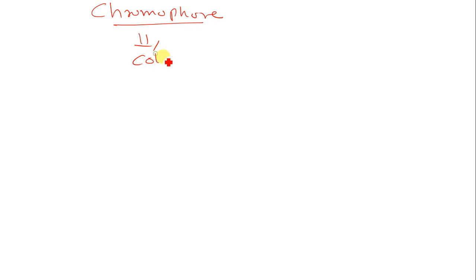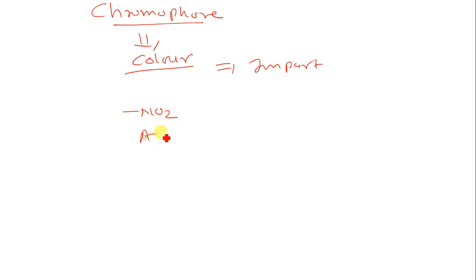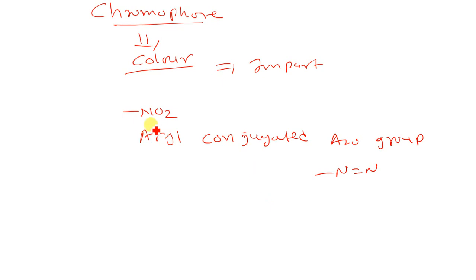Now let us start our new topic. The first important term is Chromophore. Chromo means color. The compound which imparts the color is known as a Chromophore. For example, if you have a nitro group compound or an aryl conjugated azo group — azo group is N double bond N — this nitro group imparts a yellow color, so it is known as a Chromophore.